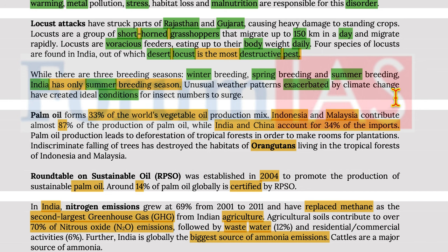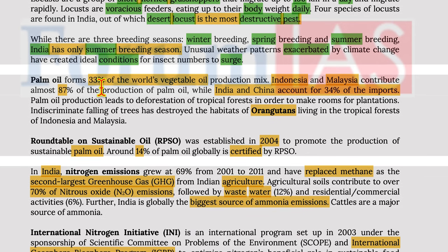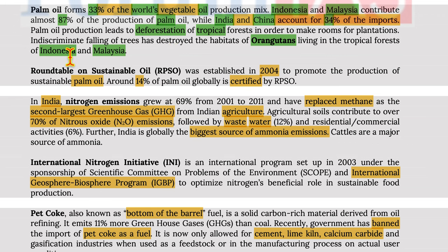Unusual weather patterns exacerbated by climate change have created ideal conditions for insect numbers to surge. Palm oil forms 33% of the world's vegetable oil production, with Indonesia and Malaysia contributing almost 87% of production, while India and China account for 34% of imports. Palm oil production leads to deforestation of tropical forests, and indiscriminate felling of trees has destroyed the habitats of orangutans in Indonesia and Malaysia. The Roundtable on Sustainable Palm Oil was established in 2004, but only about 14–40% of global palm oil is certified by it.